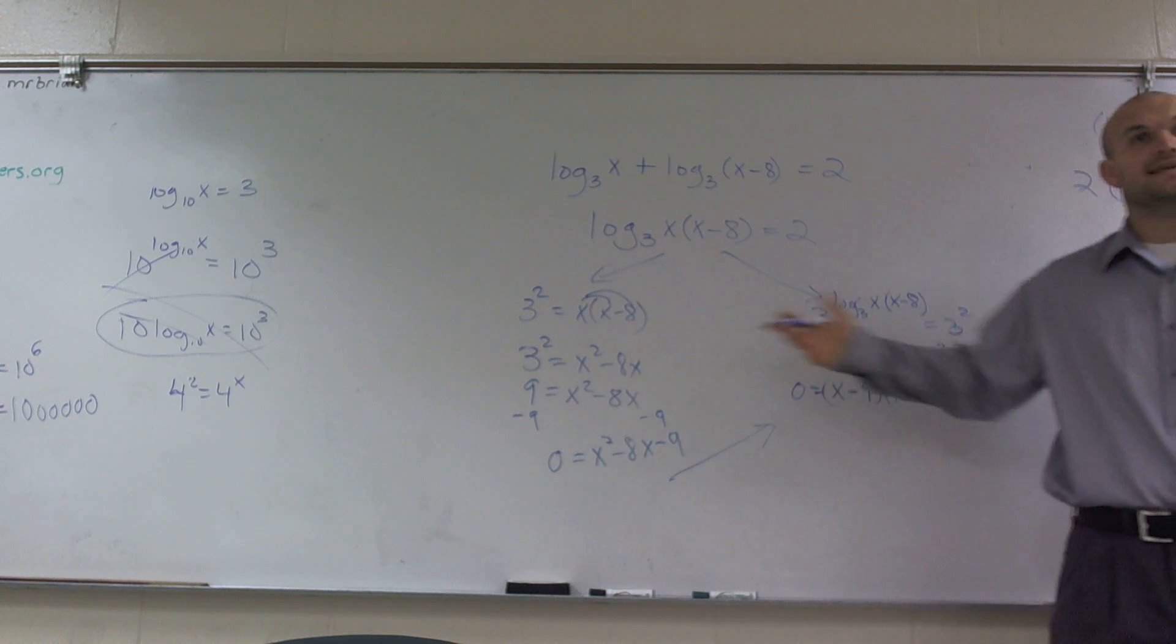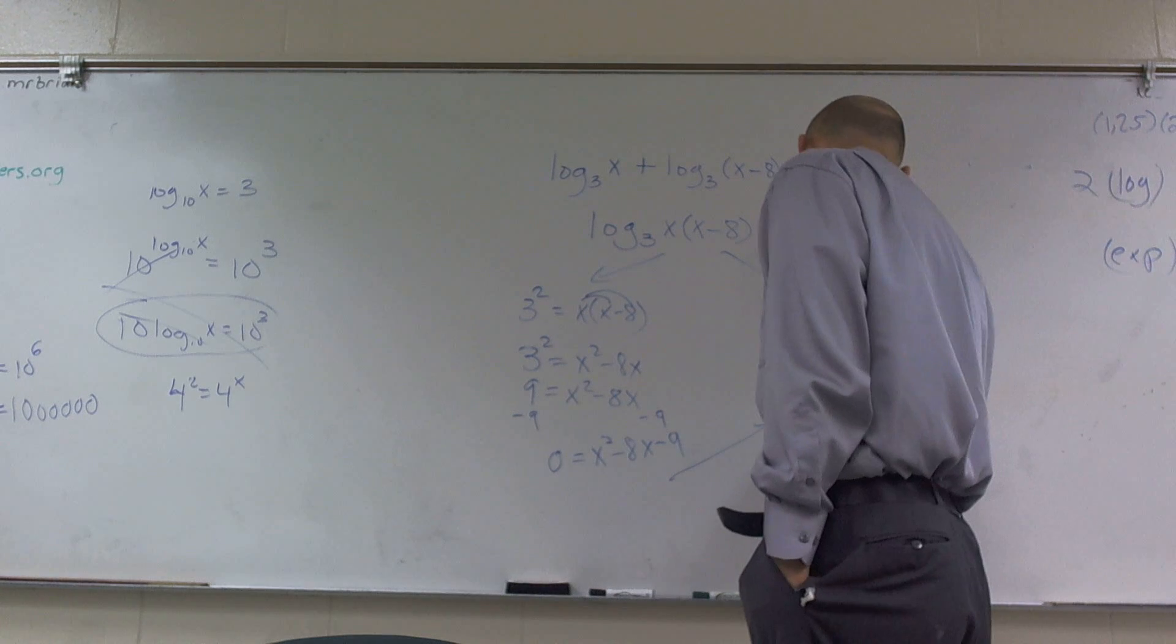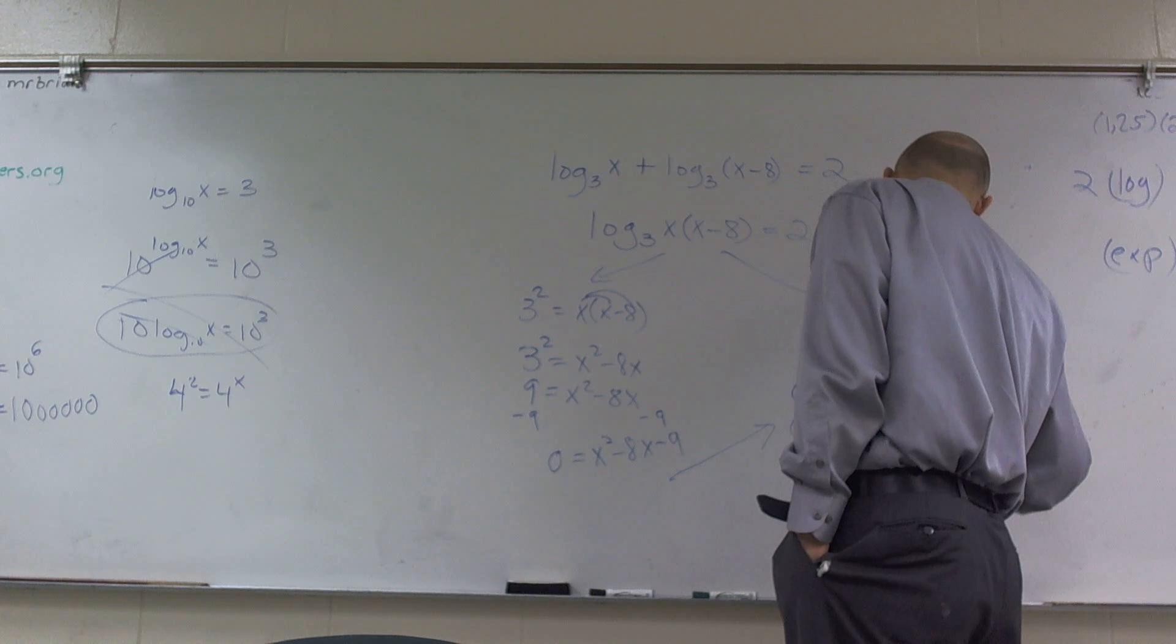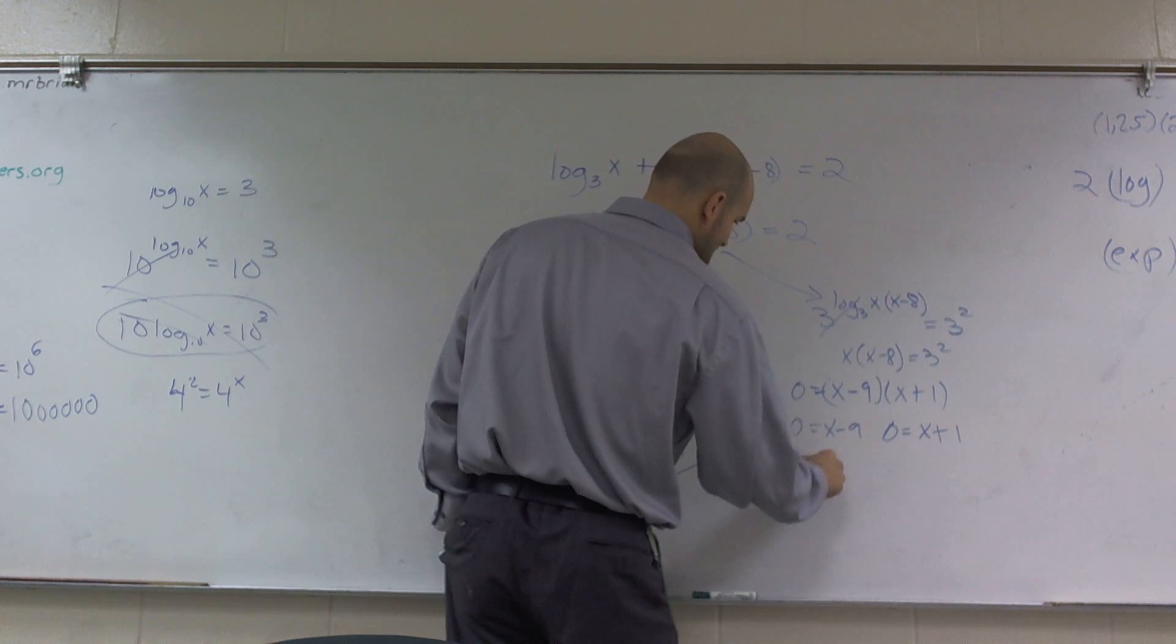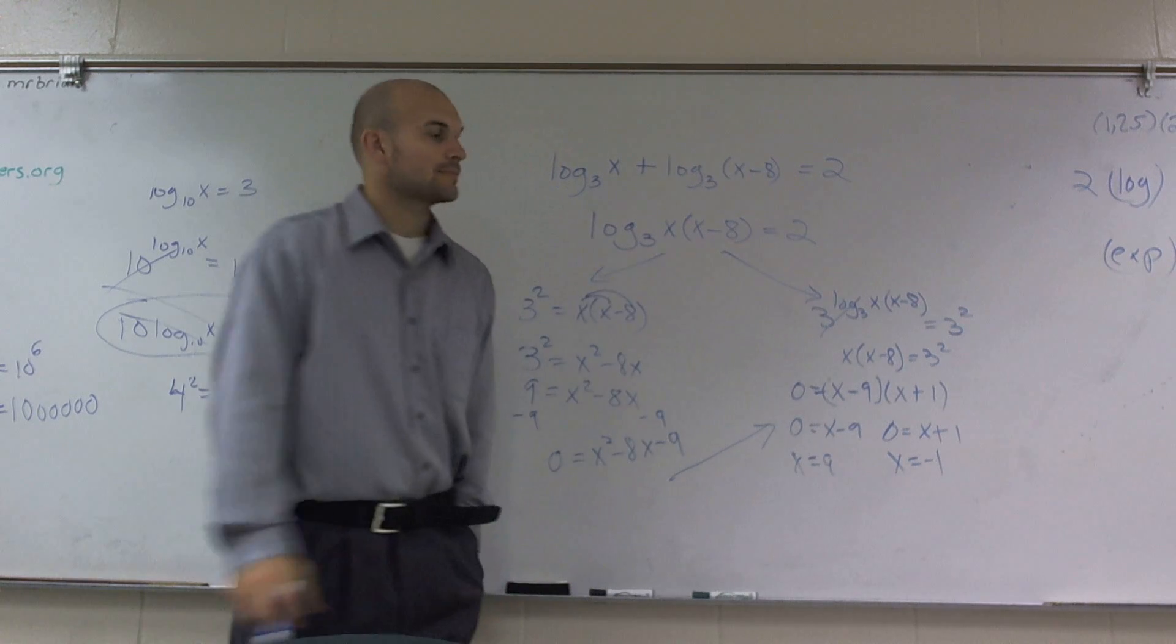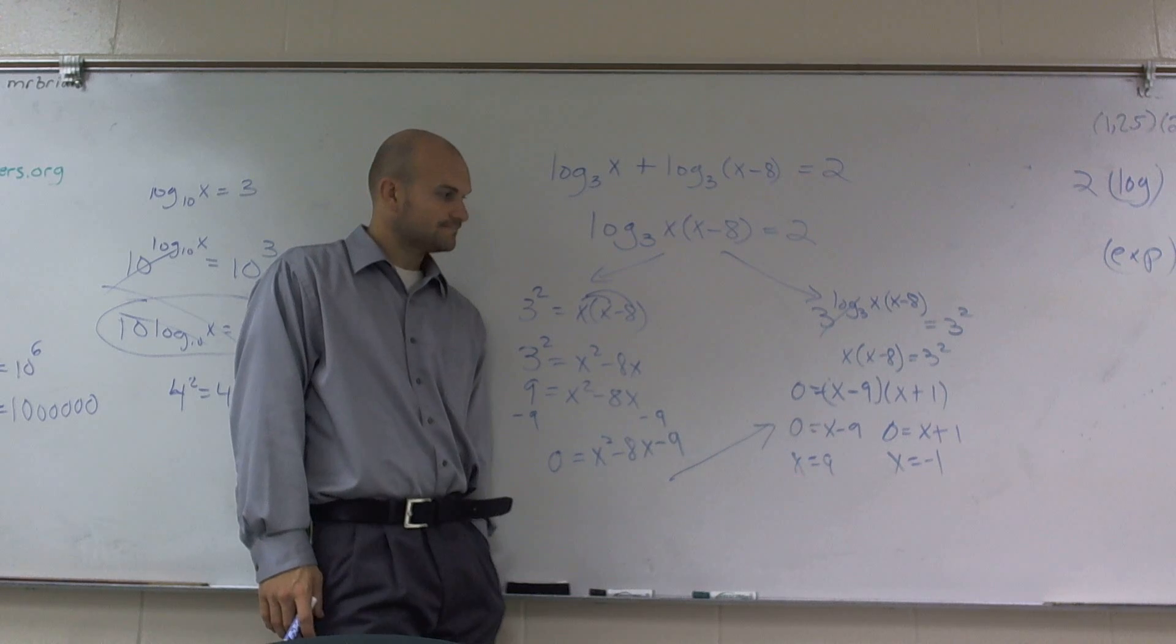And then, since I set it equal to zero, I can use the zero product property saying that now, zero is equal to x minus nine, and zero is equal to x plus one. Therefore, x equals nine and x equals negative one. Right. Correct. Okay.